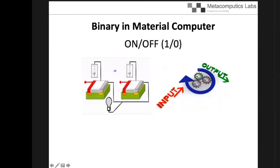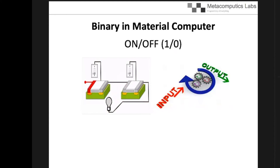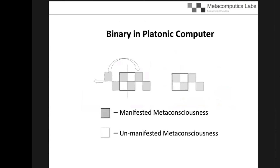In a physical computer, the binary is an on or off switch made of silicon material. So we have a computer made of silicon, we have input which is binary, we have output which is also binary, operated on an on or off switch.